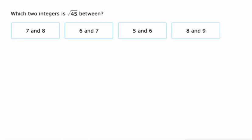Alright, so here's a little bit of review. Square root of 45. Well, I know that the square root of 36 is 6, and I know that the square root of 49 is 7. So 36 is less than 45, 49 is more than 45. This is between 6 and 7.